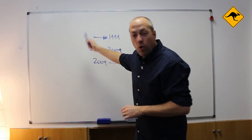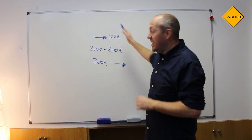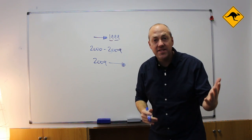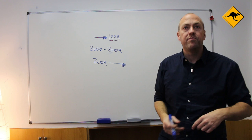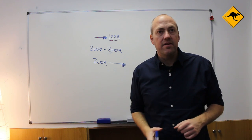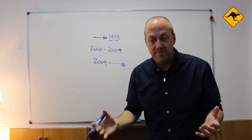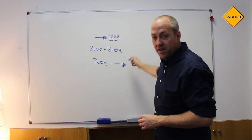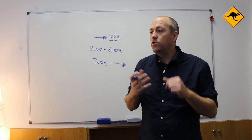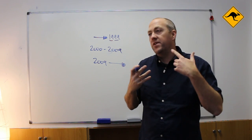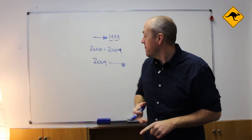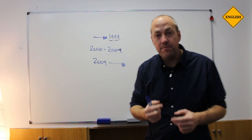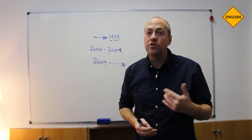So what about years? We have three categories. All of the years until 1999 are in two parts, look: 1999, 1546, 1213. The years between 2000 and 2009, we say the whole year: 2001, 2002, 2003. But then after 2009 we say in two parts again: 2010, 2011, 2016.